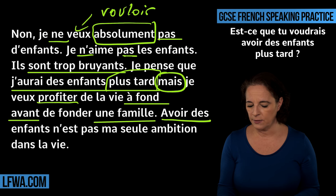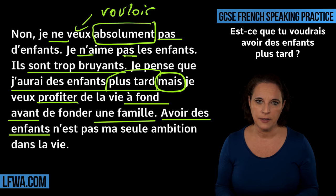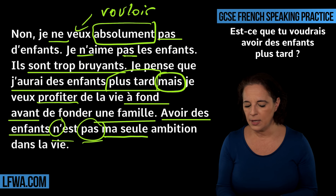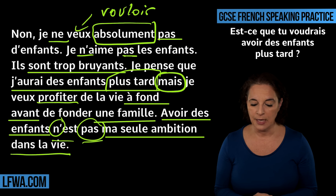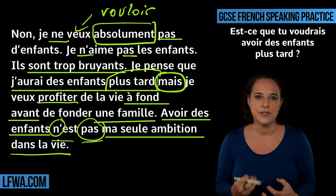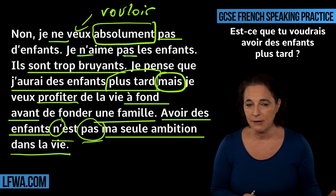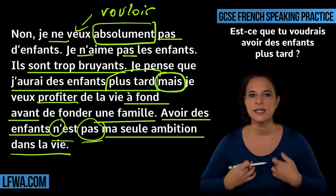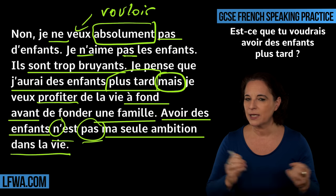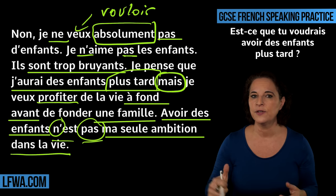Avoir des enfants n'est pas ma seule ambition dans la vie — to have children is not my only ambition in life. We like it when you start a sentence with an infinitive. Again, n'est pas is a negation. This answer is quite complicated — you don't have to put all these points in. But if you don't want children, you need to tell the examiner why. You might want to say je veux me concentrer sur ma carrière — I want to concentrate on my career. Remember, it's not about quantity, it's about quality.